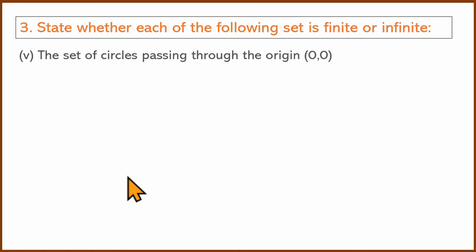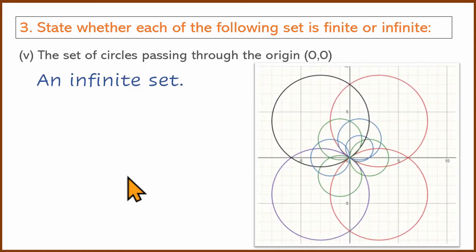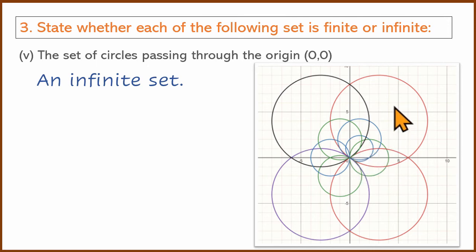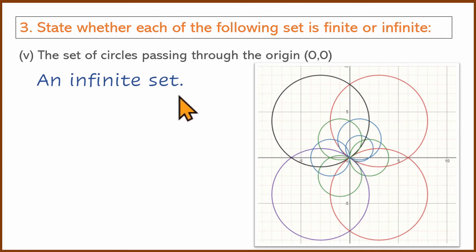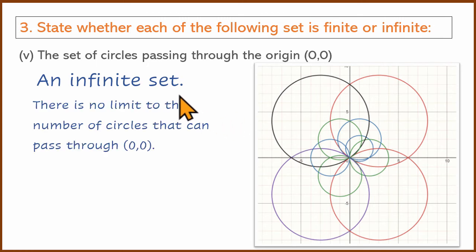Next one: A set of circles passing through the origin. From one point that is the origin — this is also an infinite set. You can draw circles of any radius passing through the origin. The double radius, triple radius — it is all about the origin. There is no limit to the number of circles that can pass through (0,0). This is the infinite set.